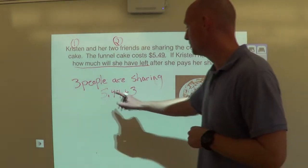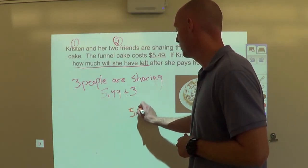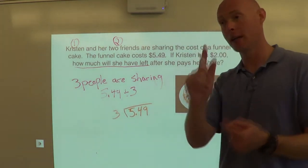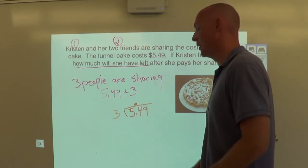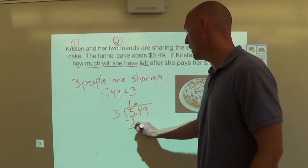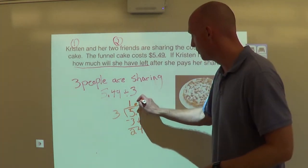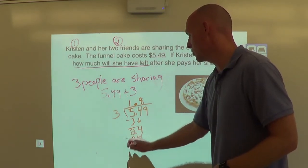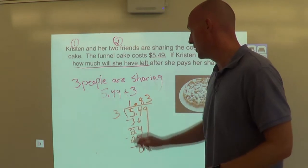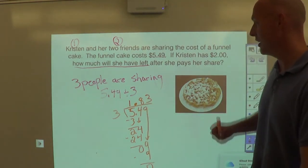Step 1, set up the problem. 5, ooh, that doesn't work. 5, decimal, 49, divided by 3. Cool. Step 2, take that decimal, bring it to the top. Boom. There it is. So now we're just dividing out. How many times does 3 go into 5? We know that's one time. 3, subtract, that gets me 2. Bring that down to get 4. So now how many times does 3 go into 24? 8. 8. 8 times 3 is 24. Subtract, that gets 0. And we bring down that 9. How many times does 3 go into 9? 3 times. 3 times 3 is 9. 0. Boom. So therefore, we now know that each person pays $1.83.